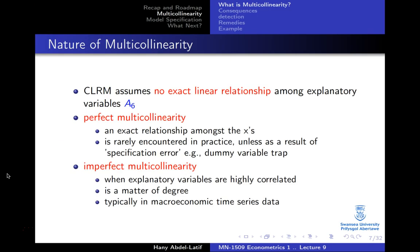Multicollinearity — what does it mean? The classical linear regression model assumes that there should be no exact linear relationship among the explanatory variables. We can have two cases: perfect multicollinearity, where you have an exact relationship amongst the X's or independent variables, and one example is when you include dummy variables where you have g groups and you include g dummies.